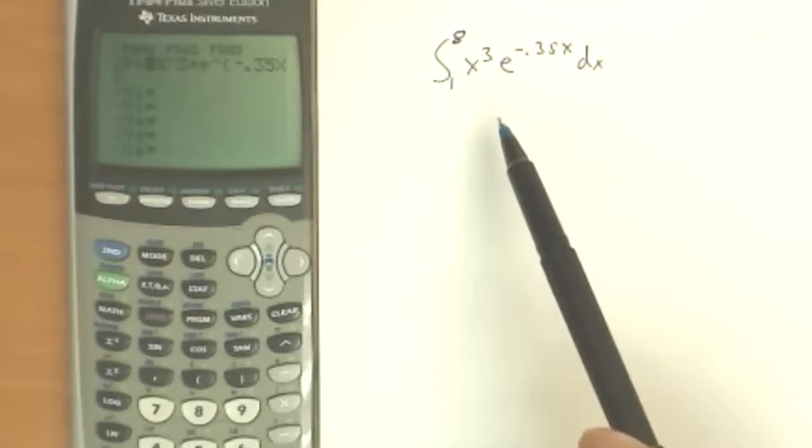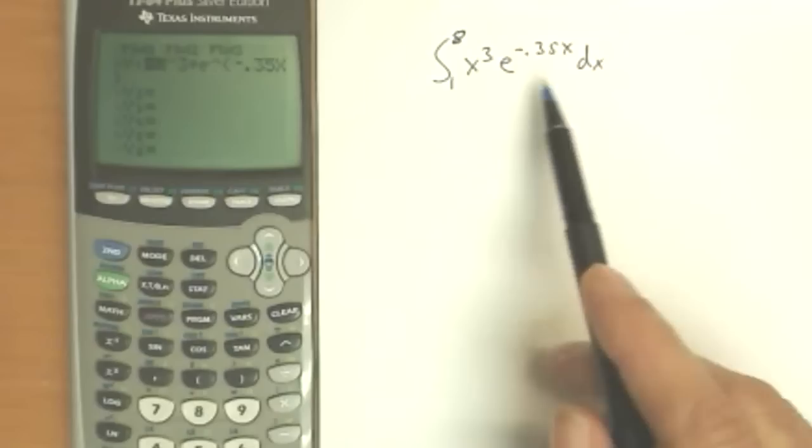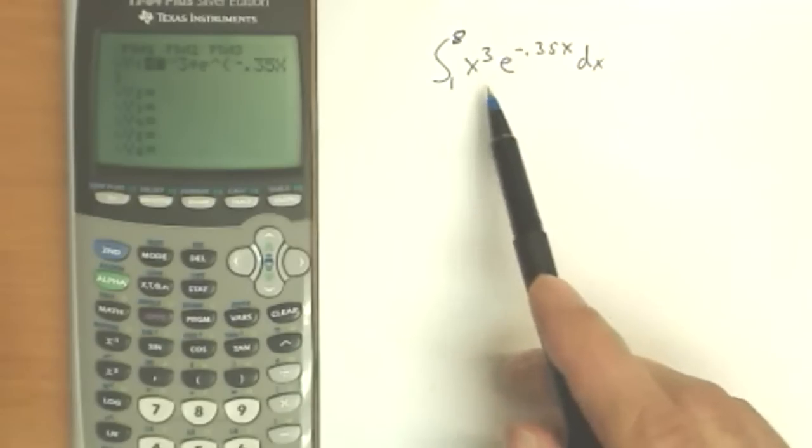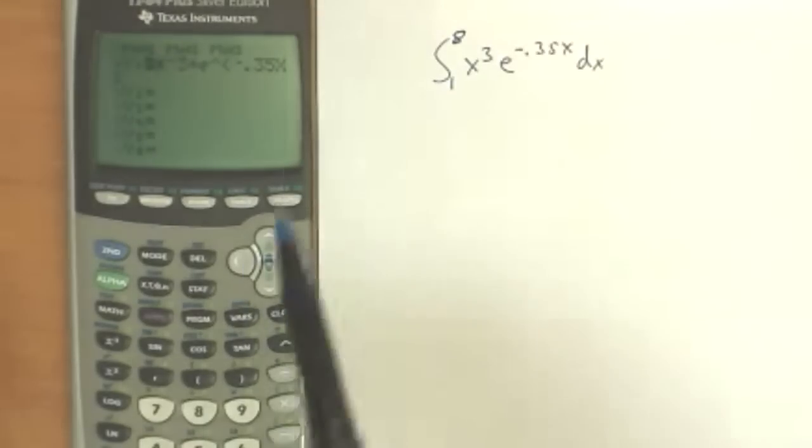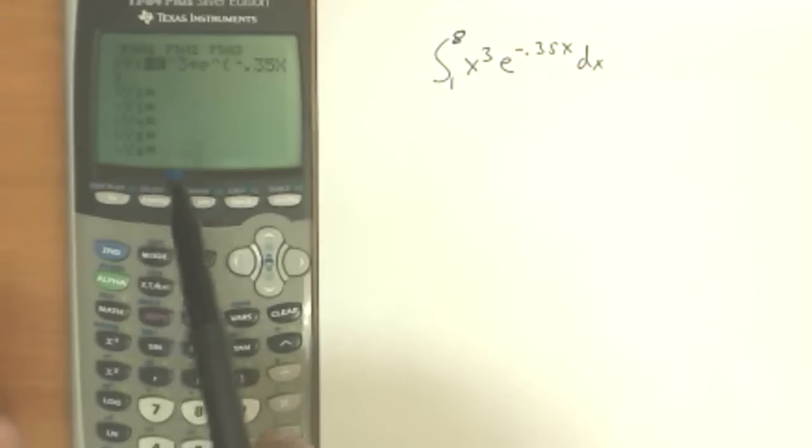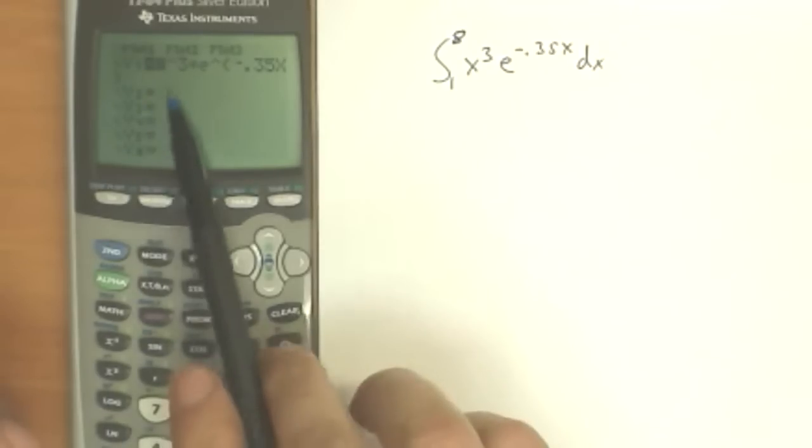We could use the antiderivative to get our answer quite directly. In this case, however, this would be a bit of work. This would require integration by parts three times in order to get this x cubed down to the size we want. So we're going to do this one by the calculator, and I've taken the liberty of graphing it already.